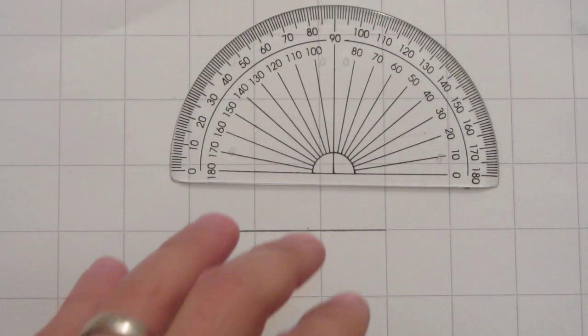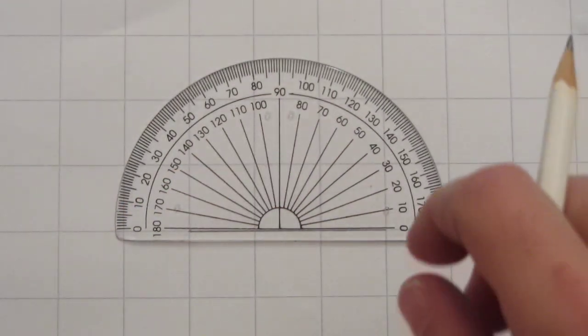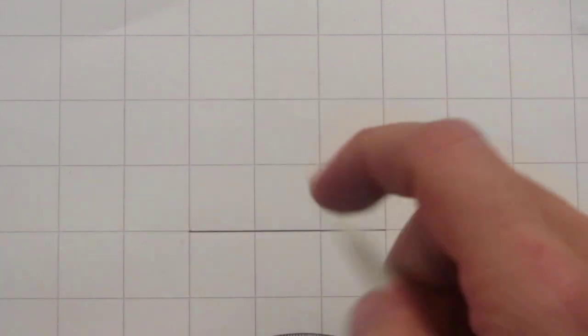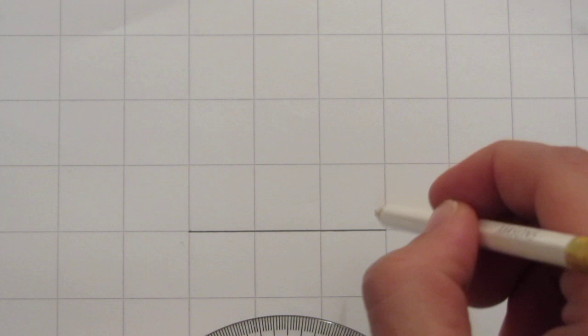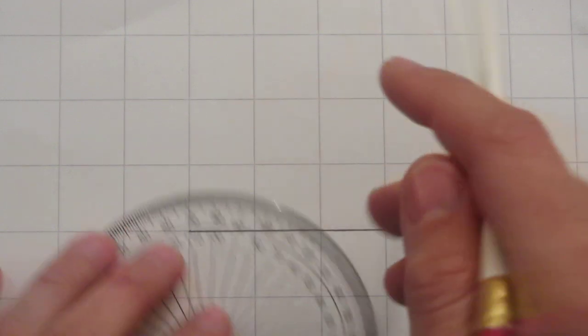A video about drawing acute angles to the nearest 10 degrees. Here we have a line. I'm going to try drawing some acute angles going off in this direction and in this direction.